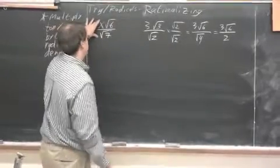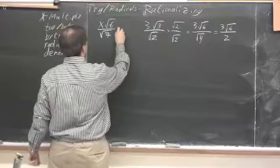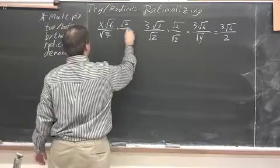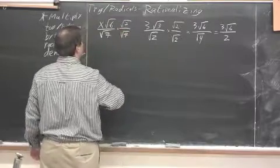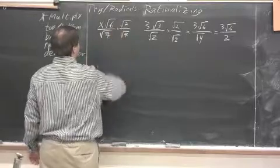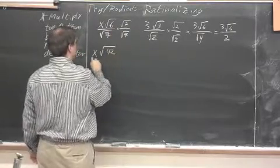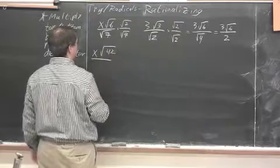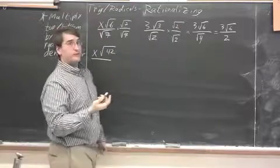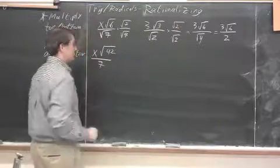So, with this example that we ended with in the first video, I'm going to multiply top and bottom by radical 7. And I get, combining the radicals on top, x radical 42 over root 7 times root 7 is radical 49, but we can just go straight to 7.